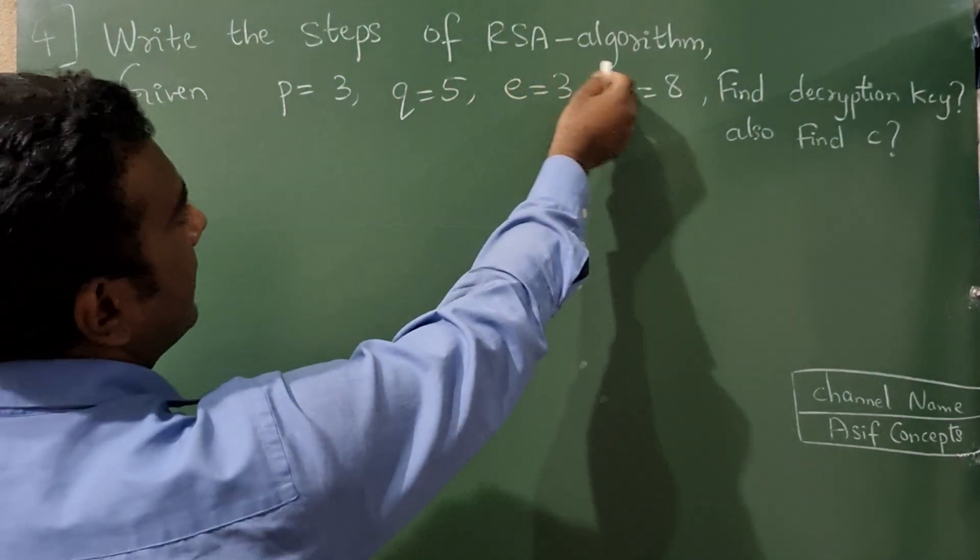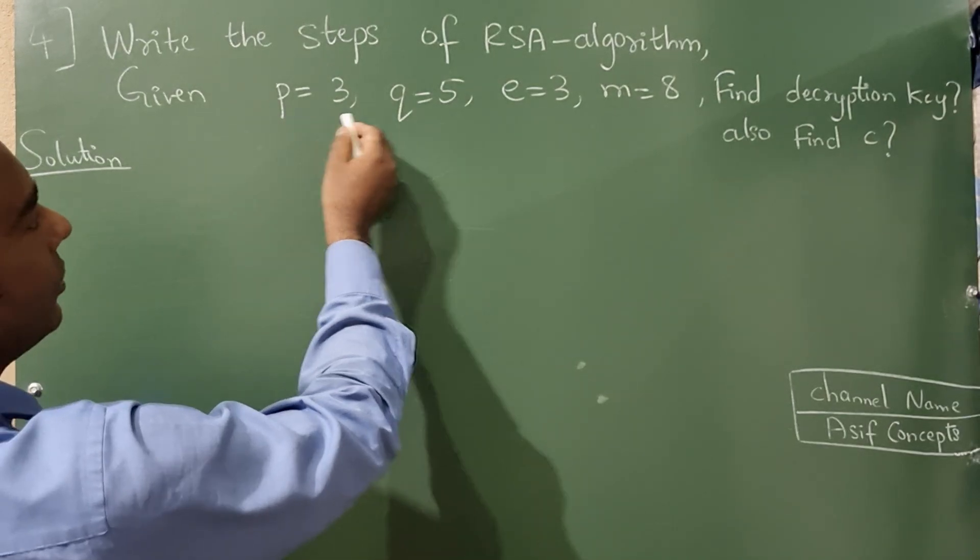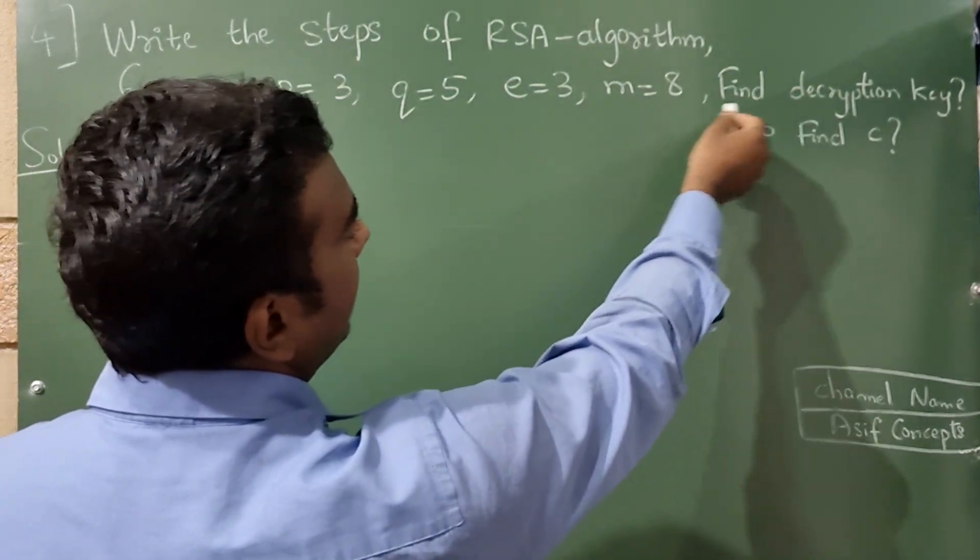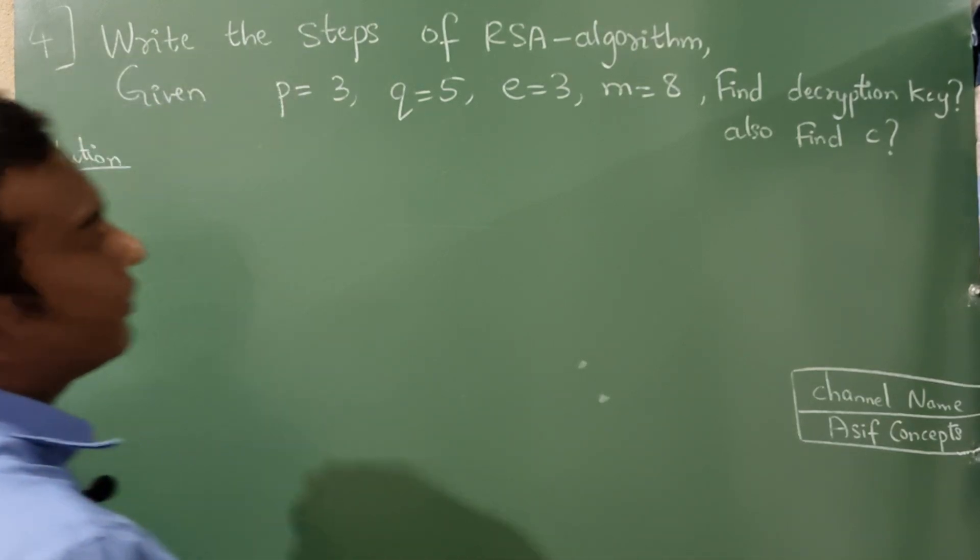Write the steps of RSA algorithm given P is equal to 3, Q is equal to 5, E is equal to 3, M is equal to 8, find encryption key and also find C.